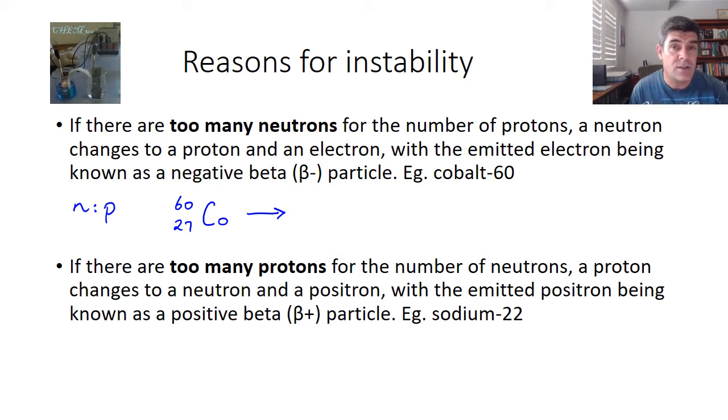And the best way to do these or to write these reactions is to actually start with the particle of radiation that's released, and then just balance the numbers. So a beta-negative particle is going to have a negative 1 charge and 0 mass.